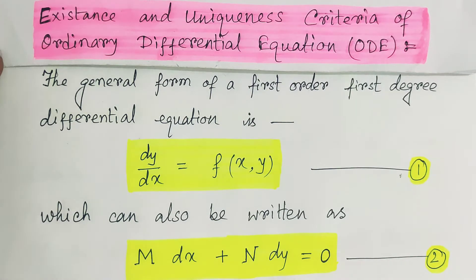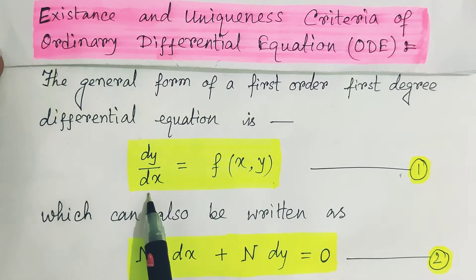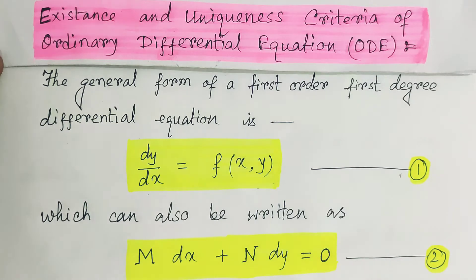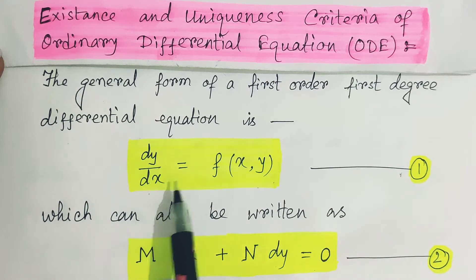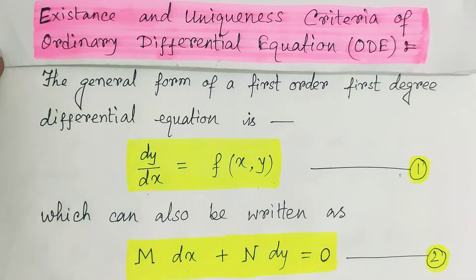I am giving you the structure of a differential equation. Here it is: dy/dx = f(x,y). This is the general form of a first-order first-degree differential equation. This equation we can also write as M dx + N dy = 0, which is just another form. Here M and N are either functions of x and y or they may be constants.